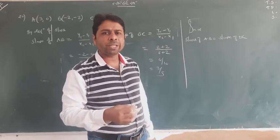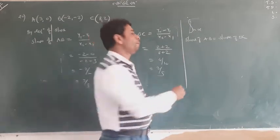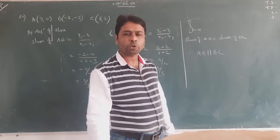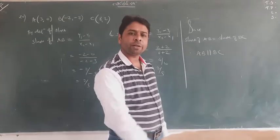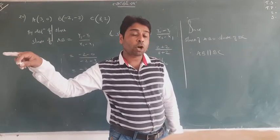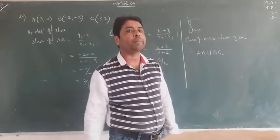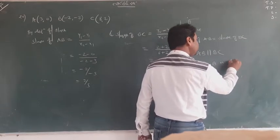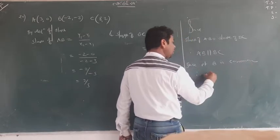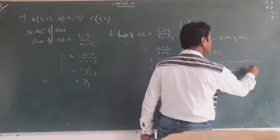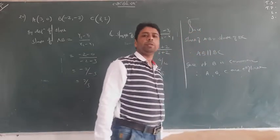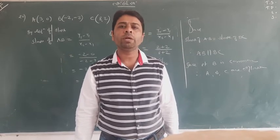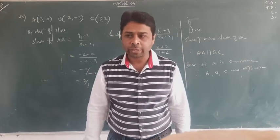Since slope of AB = slope of BC, these lines would normally be parallel. But point B is common to both AB and BC. You cannot draw parallel lines through a common point. Therefore, we conclude that A, B, and C are collinear points. When one point is common and slopes are equal, the three points must be collinear.